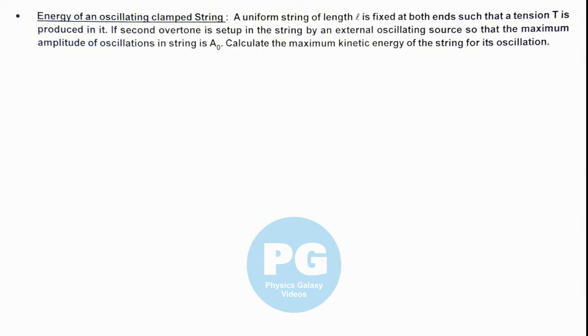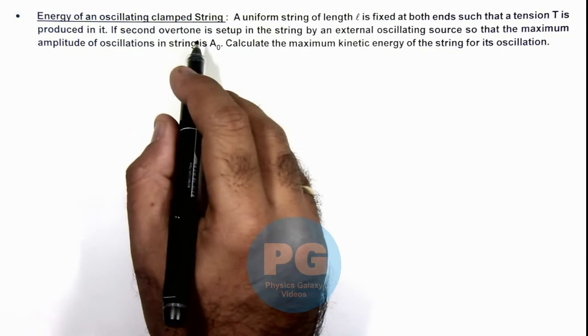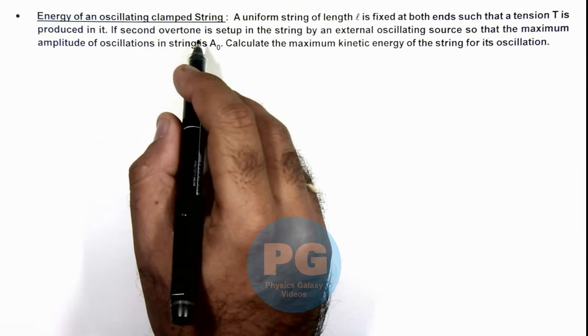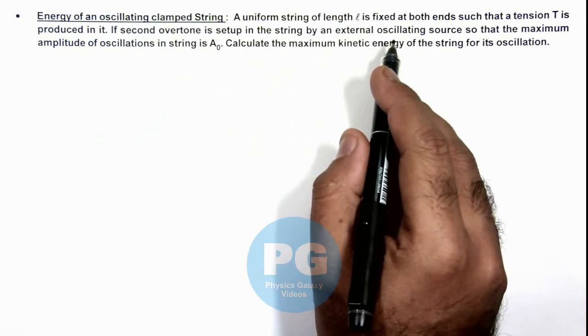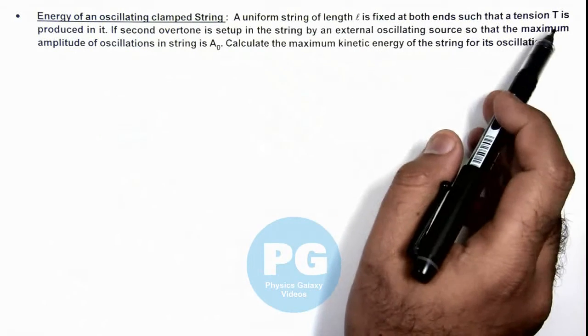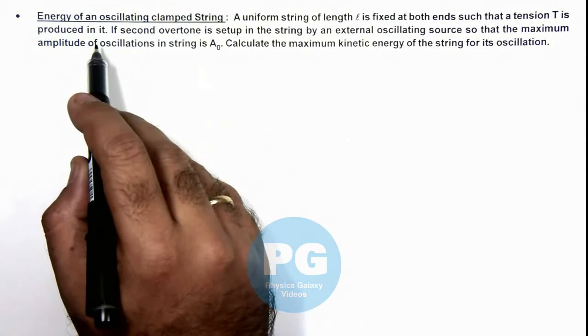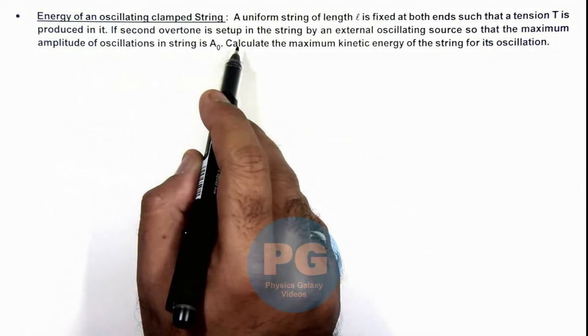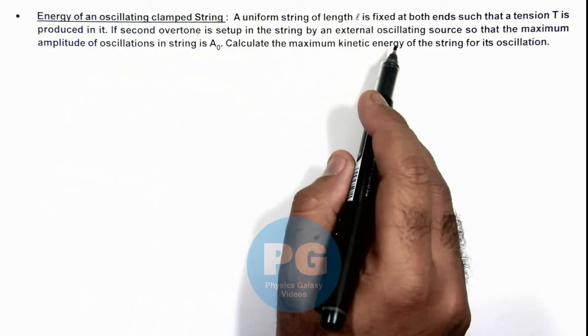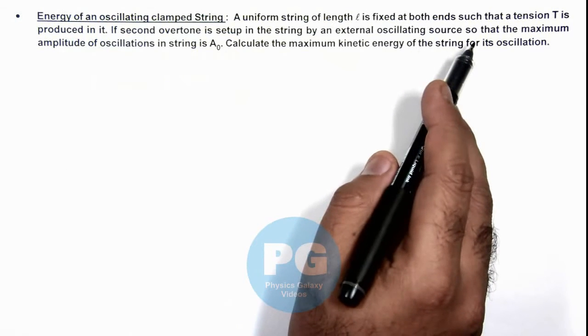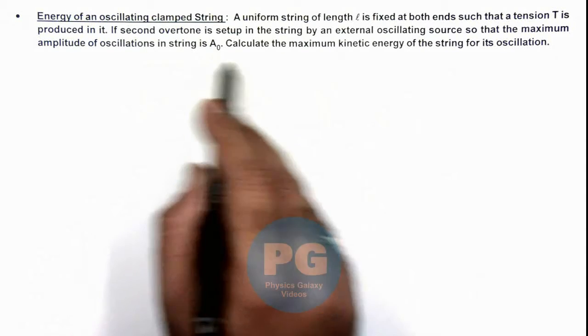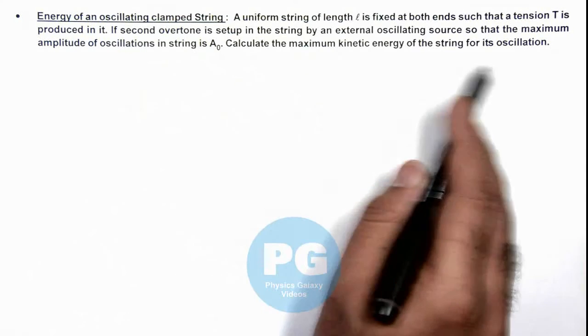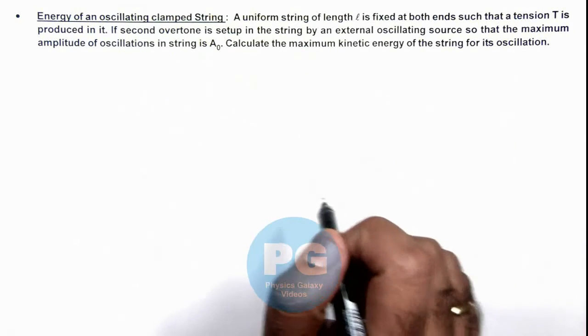In this illustration we'll analyze the energy of an oscillating clamped string. We are given that a uniform string of length l is fixed at both ends such that a tension T is produced in it. If second overtone is set up in the string by an external oscillating source so that the maximum amplitude of oscillations in string is A₀, we are required to calculate the maximum kinetic energy of the string for its oscillations.